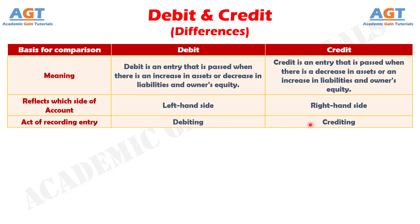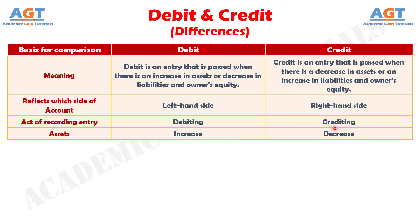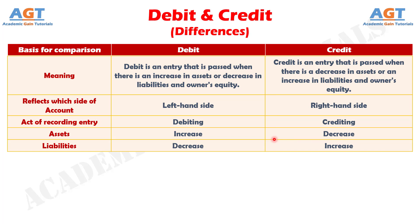Number 4: the value of an asset that is being debited has increased, or the firm has purchased more of that asset. Number 5: liabilities show a decrease by the amount debited.